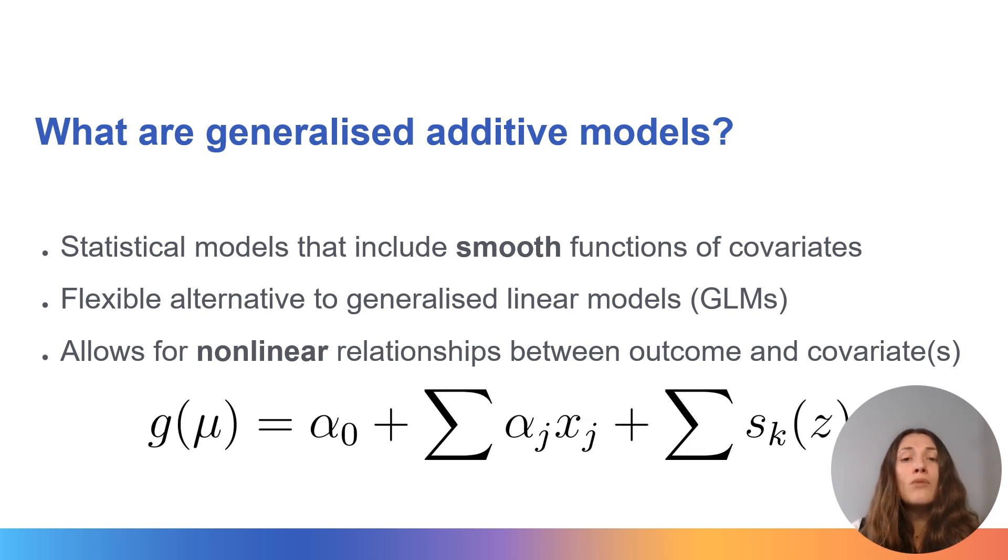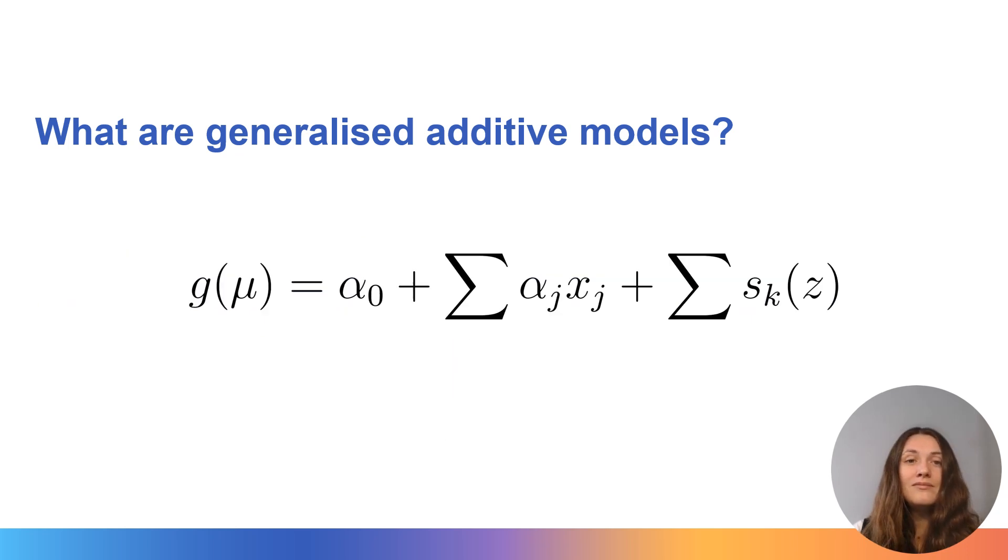On screen is the model equation for a generalized additive model. If you're familiar with linear models, the first half of this should be fairly recognizable. That's because the majority of this equation is exactly the same as our generalized linear modeling equation. On the left hand side we have our outcome of interest mu transformed by some link function determined by model choice.